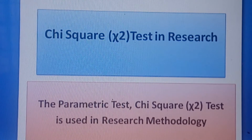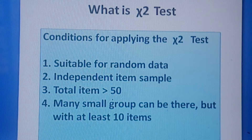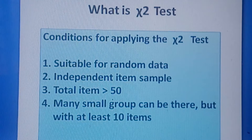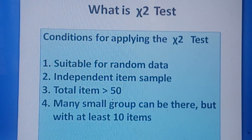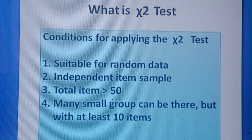Let us see what are the conditions for applying the chi-square test. The conditions can be summarized as four: first, it is suitable for random data; second, it is suitable for independent item samples; third, the total number of items should be greater than 50; and fourth, any small group in the sample should have at least 10 items.